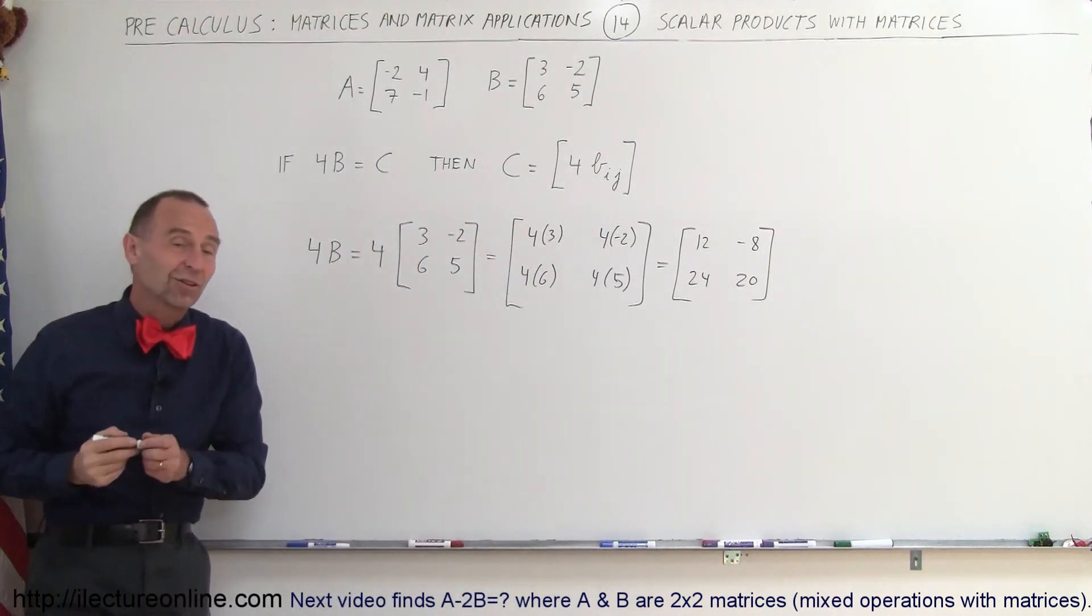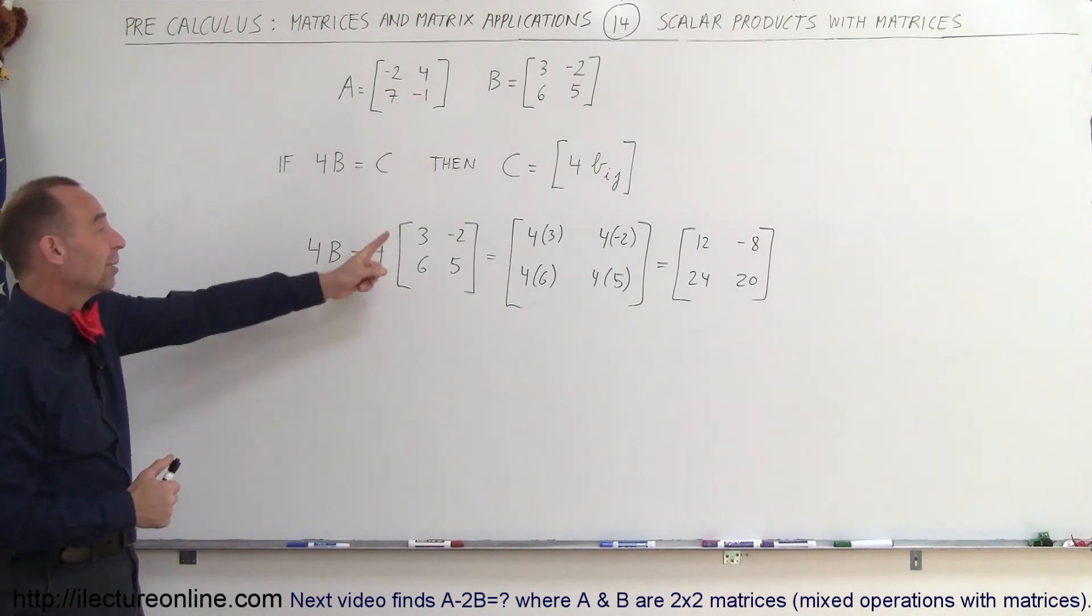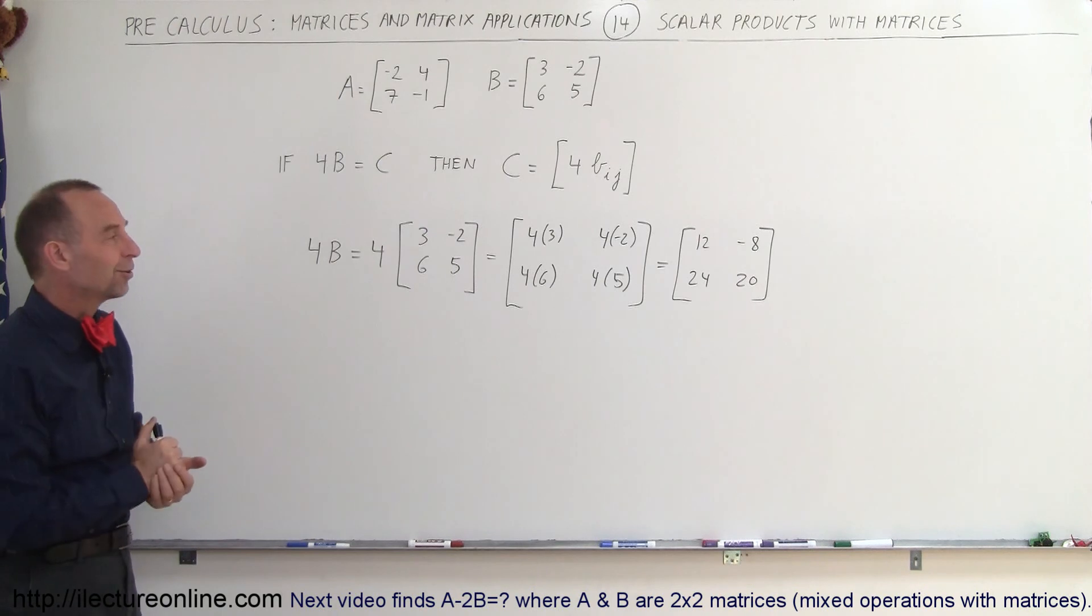Actually multiplying matrices with a scalar is probably the simplest matrix operation that we could do. Simply take each element in the matrix and multiply it times the scalar. And that's how it's done.